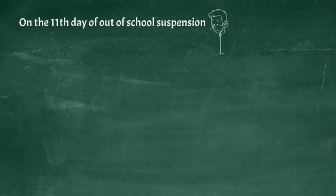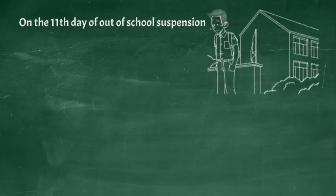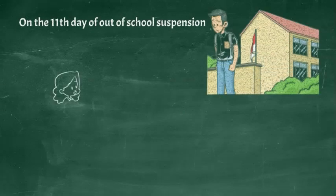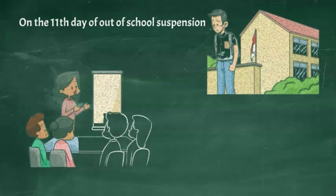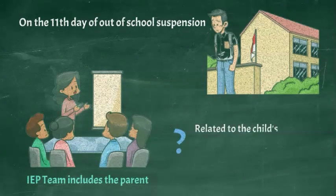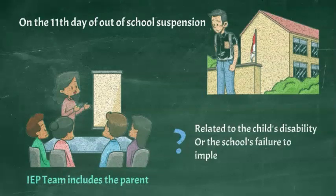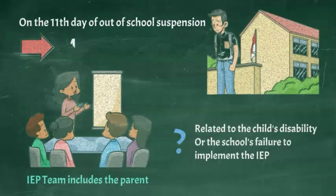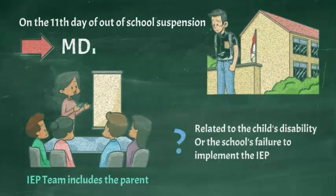On the 11th day of out-of-school suspension in one school year for a student with an IEP, the school must hold a meeting that includes the parent to decide if the behavior that triggered the suspension is related to the child's disability or the school's failure to implement the child's IEP. The meeting is called a Manifestation Determination Review, or MDR.